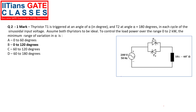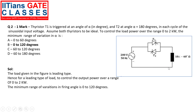The next question is also a one-mark question. Thyristor T1 is triggered at an angle alpha and T2 is triggered at alpha plus 180 degrees in each cycle of the sinusoidal input voltage of 200 volts, 50 Hz. Assuming both thyristors are ideal, to control the load power in the range of 0 to 2 kilowatt, they are asking for the minimum range of variation of alpha. This is an AC voltage regulator. The load is of a leading type because the angle is negative, so for a leading load to control output power in the range of 0 to 2 kilowatt, the minimum range of firing angle will be 0 to 180 degrees. If the load were of lagging type, the solution would be different.